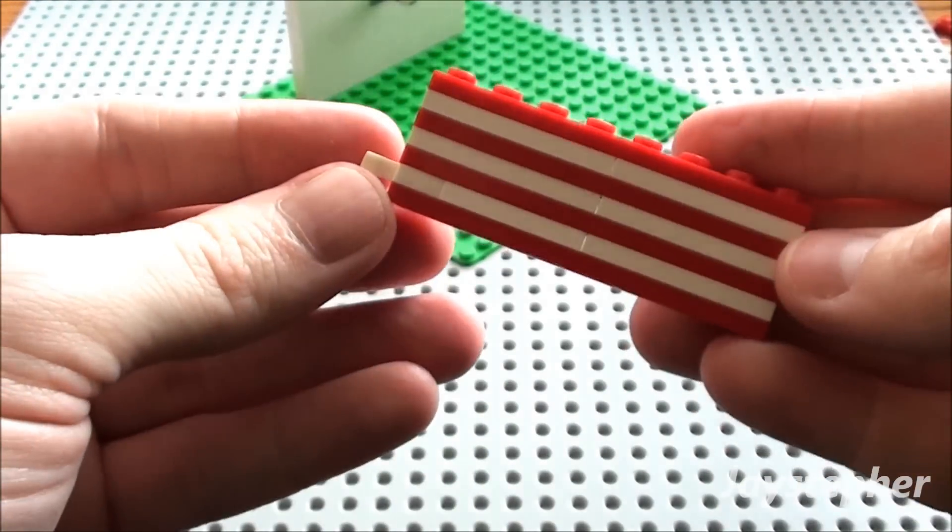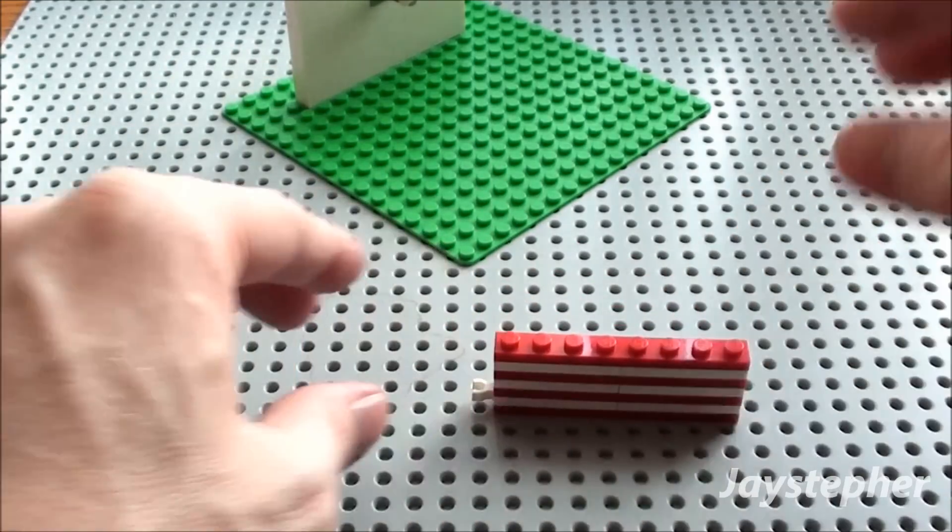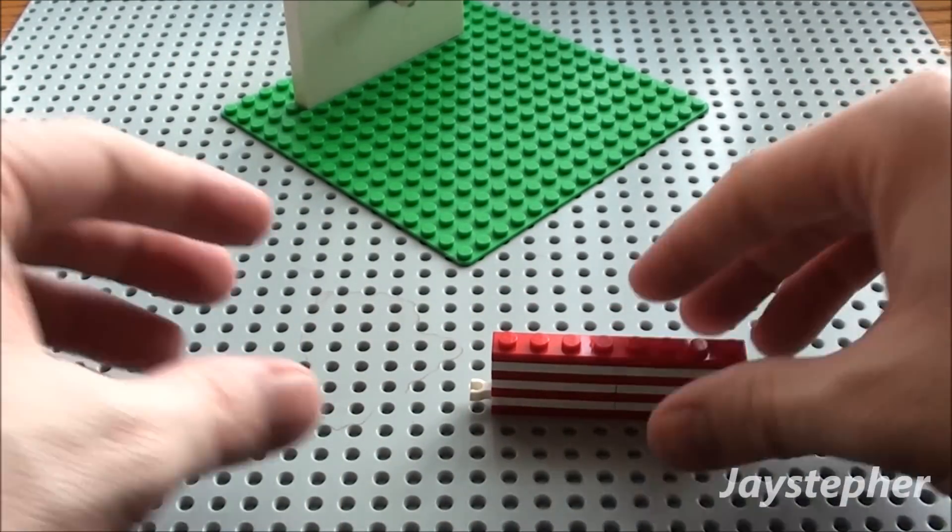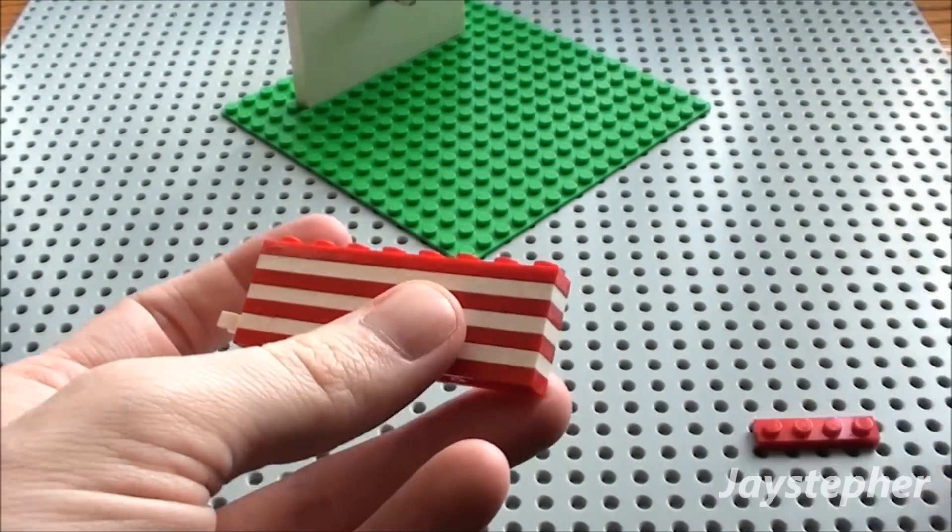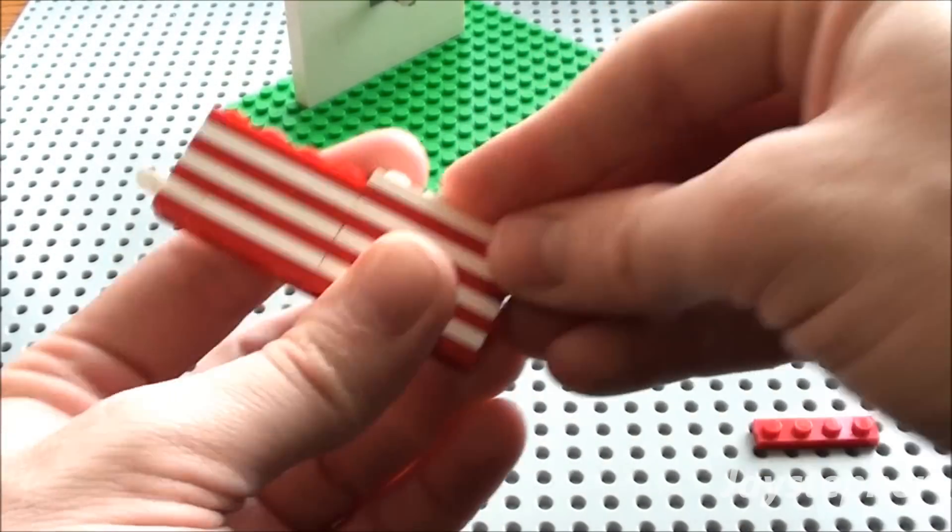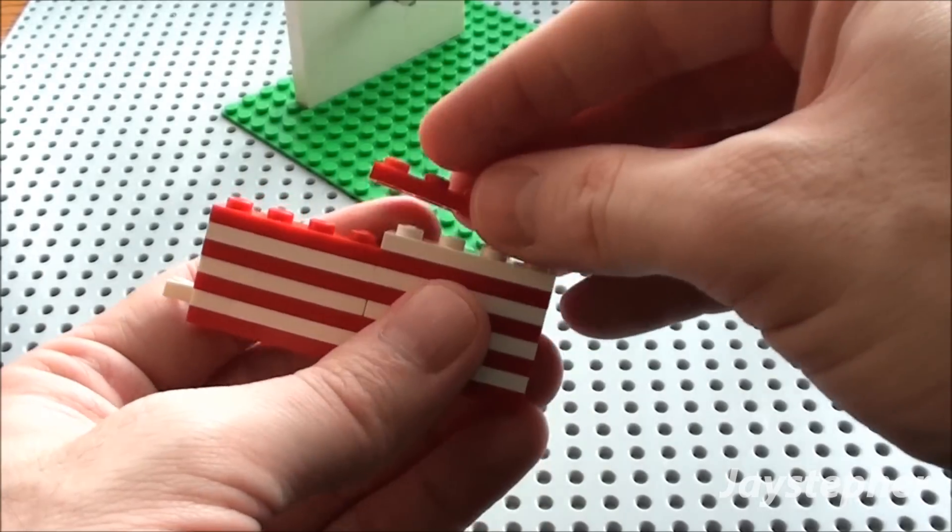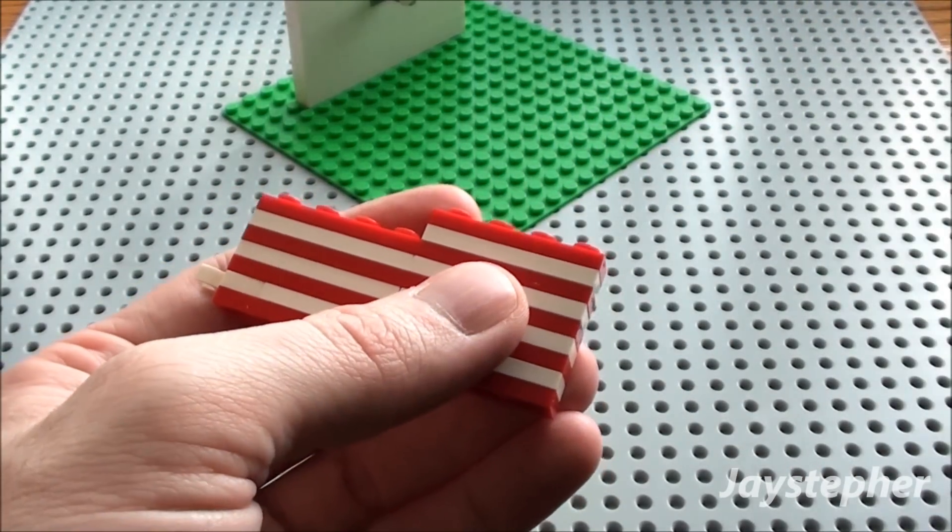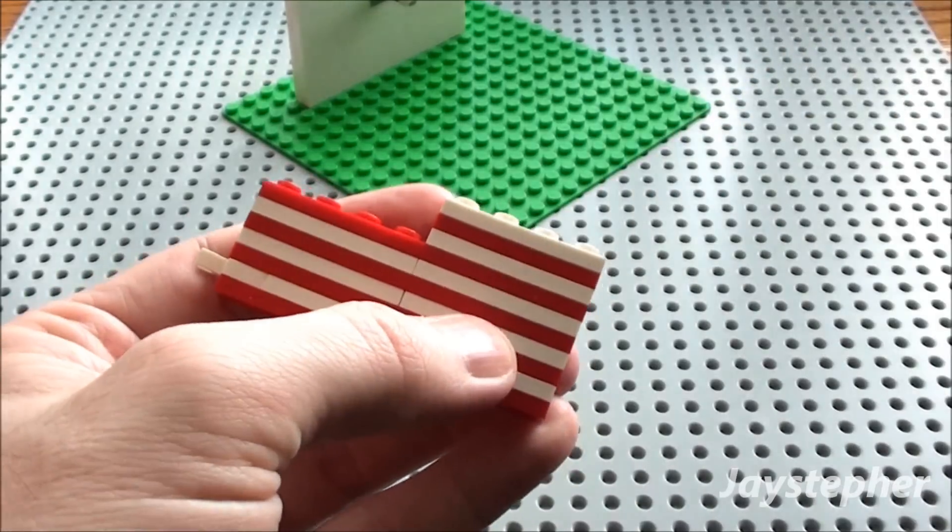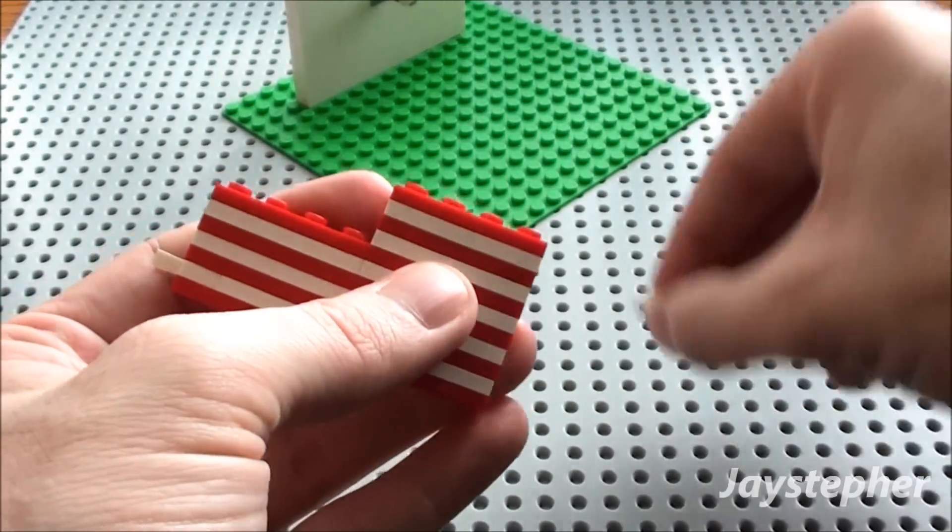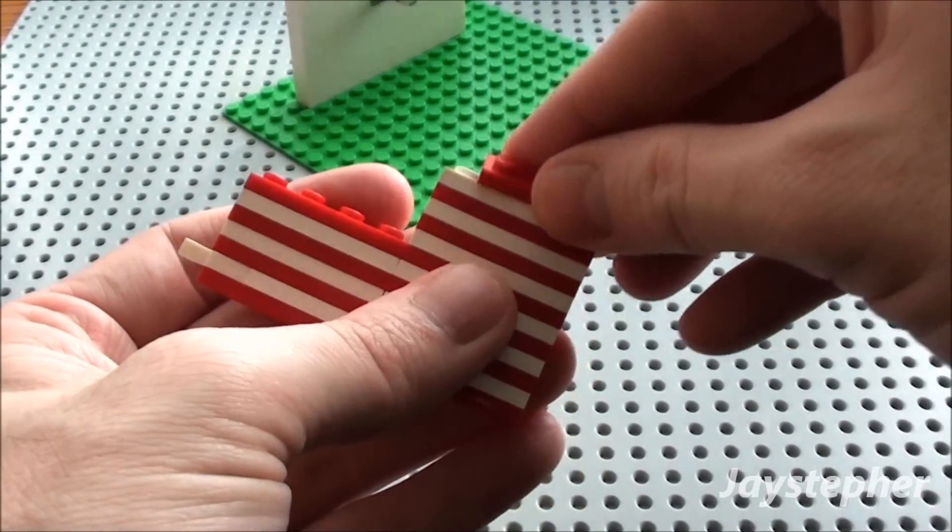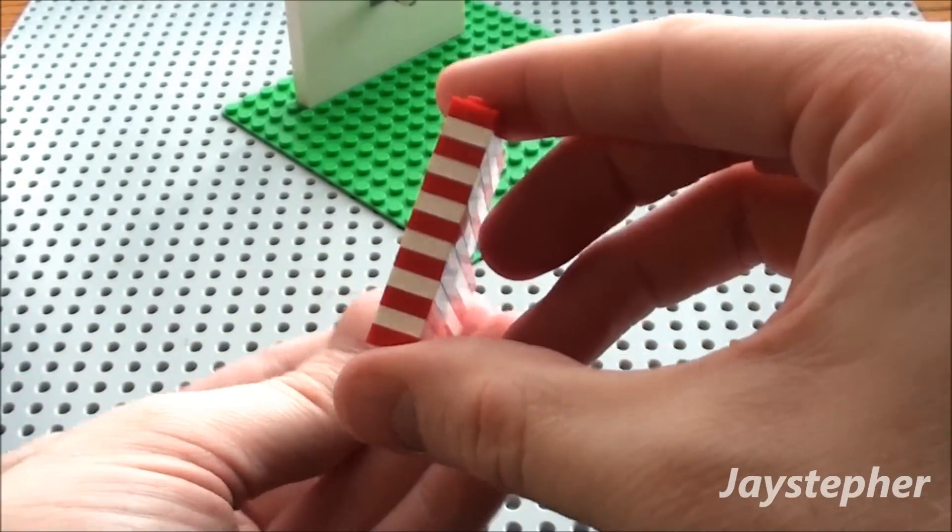And there's the first half of the flag. Now I'm going to build the other part of the flag here. Take another 1 by 4 white. I'm just going to keep stacking them on top of one another in alternating color fashion.